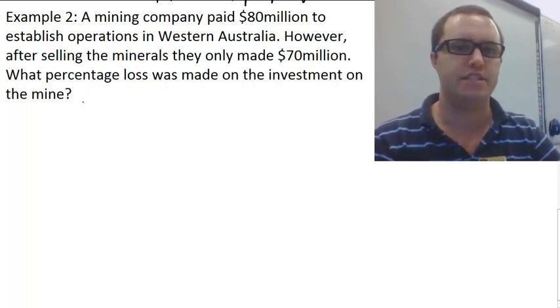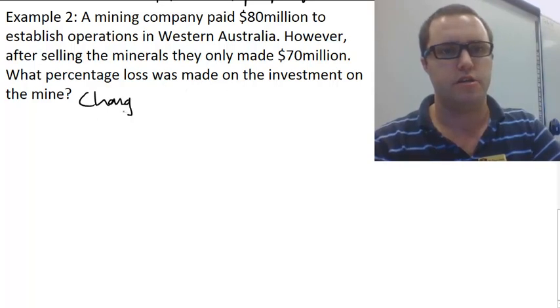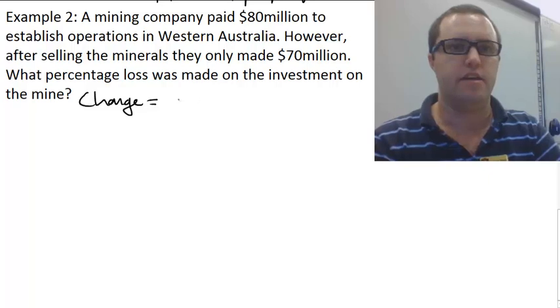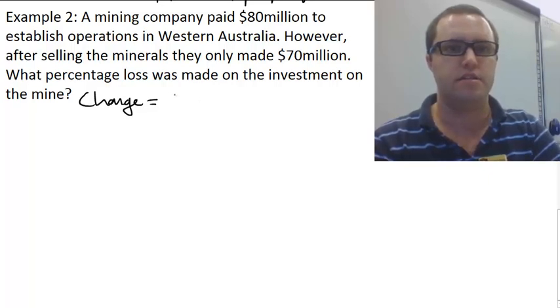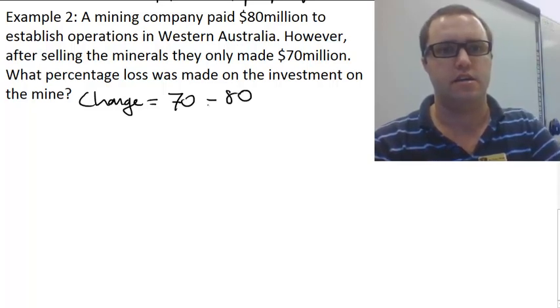So let's look at our change which is equal to the final minus the initial. They made $70 million and they had invested $80, which leaves us with negative $10 million.